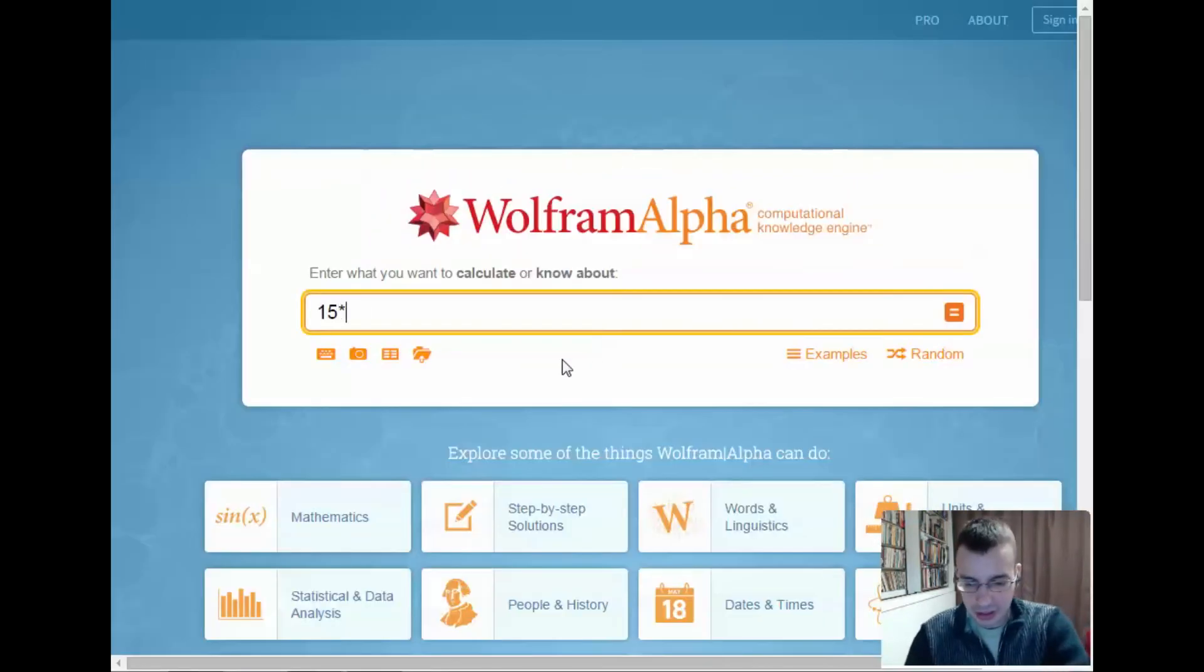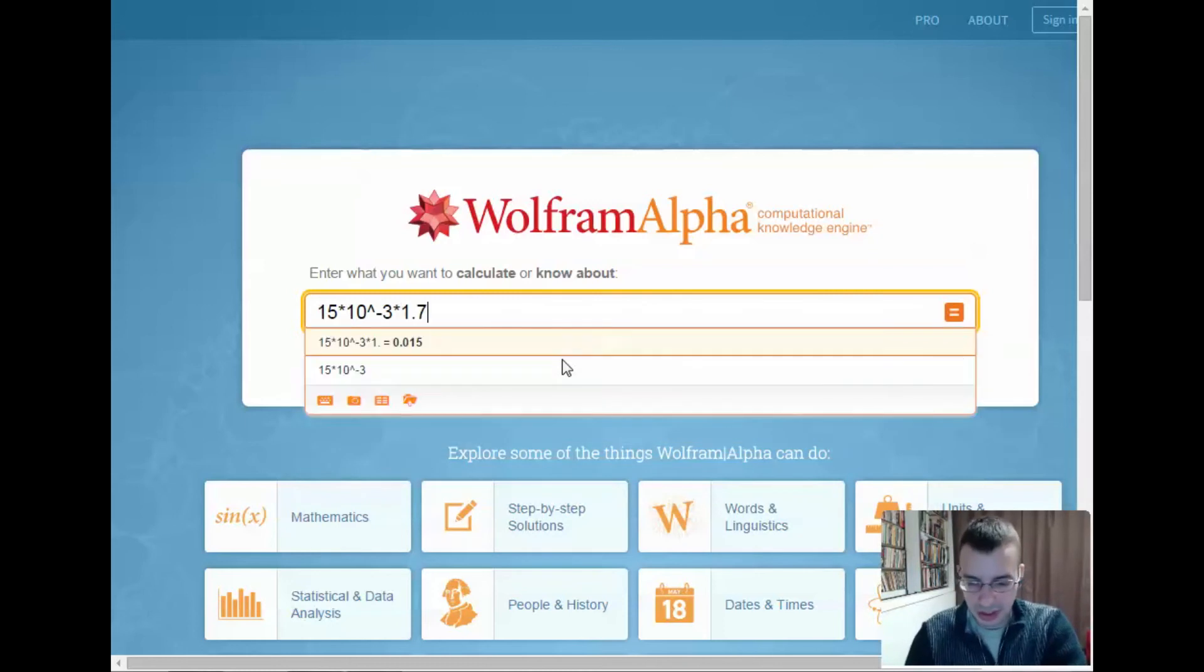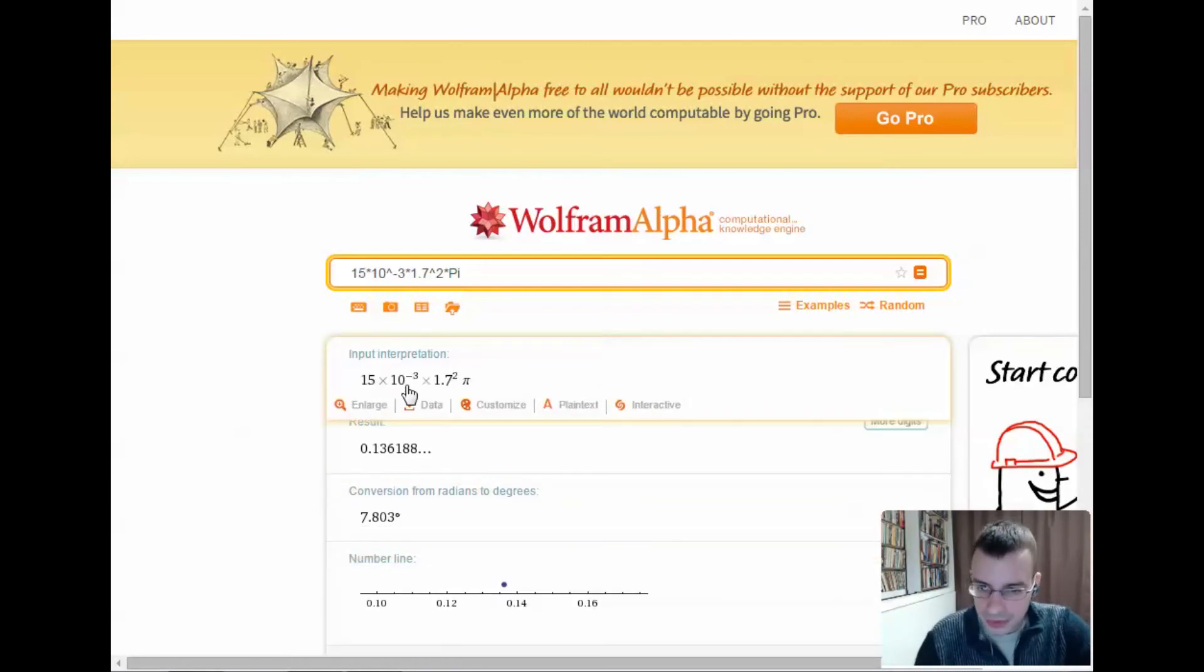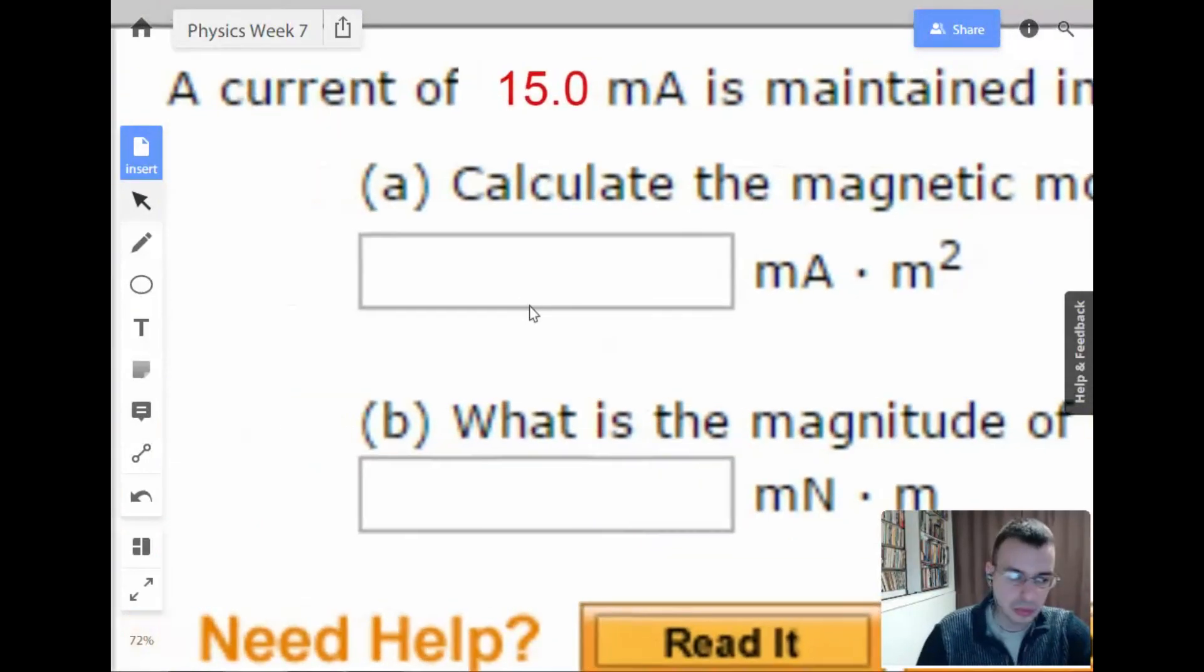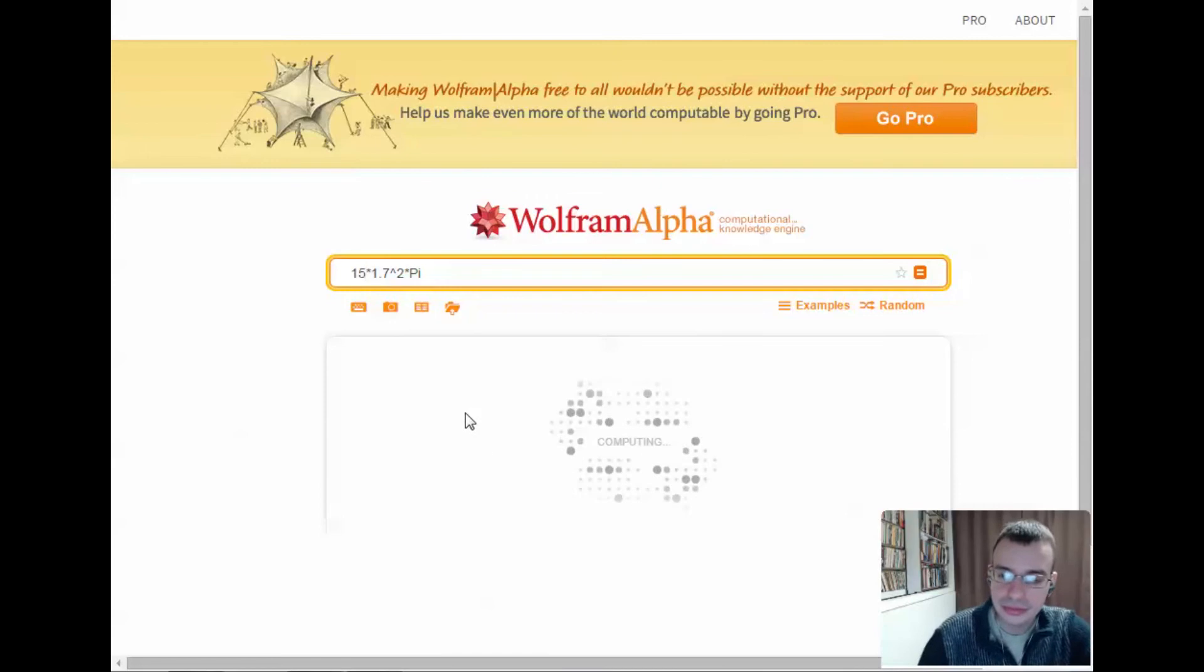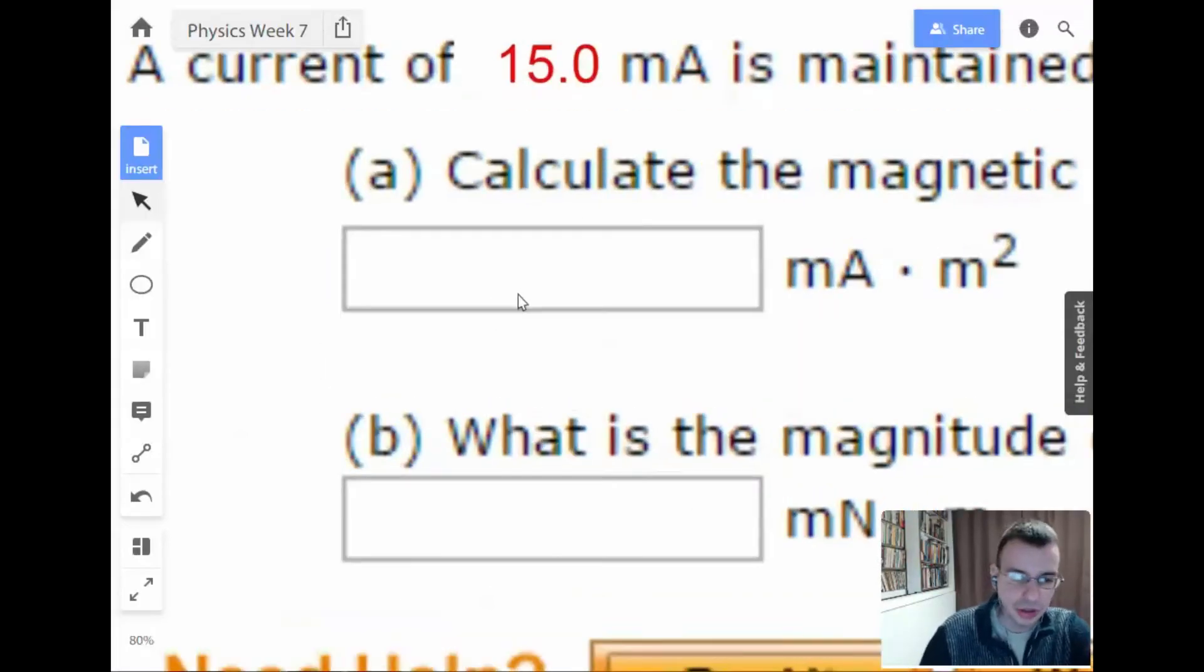Alright, 15 times 10 to the negative third times 1.7 squared times pi. I'm going to get rid of the 10 to the negative third because I want it in milliamps. 0.136. Okay, I'm good with that.